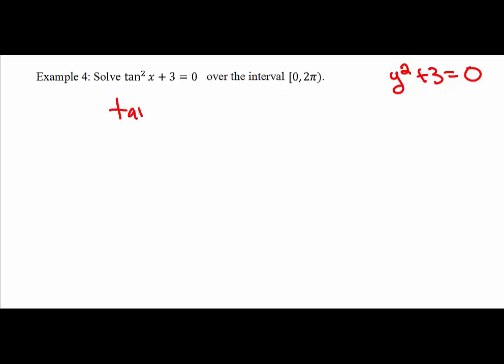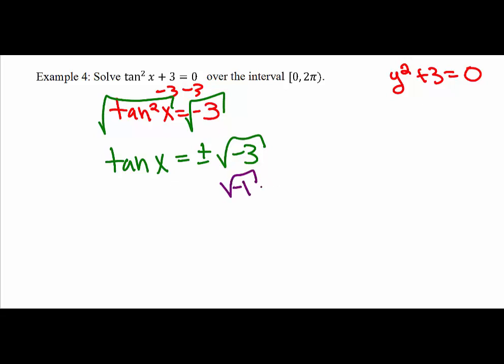So we want to subtract 3, we want to get tangent squared by itself on one side, and then we'll take the square root of both sides, and that leaves us with tangent x, so tangent to the first power of x, equals plus and minus the square root of negative 3. Well, if we think back to our algebra days, the square root of a negative number would be an imaginary number. So we can think of it as the square root of minus 1 times the square root of 3, and the square root of minus 1 we know is i. Well, this would mean that we would have to have a tangent value of some angle give us an imaginary value. We have no imaginary tangent value, so this particular equation has no solution.